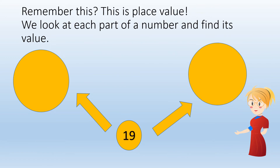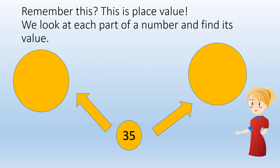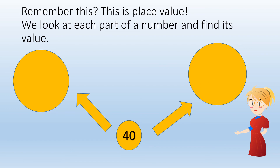How about 19? 1 ten, 9 ones, 10 and 9. 35? 3 tens, 5 ones, 30 and 5. How about the number 40? 4 tens, 0 ones. You must remember to write the zeros still, otherwise when you're trying to write 40 you'd only write 4 and then you wouldn't have enough.